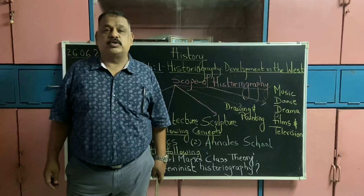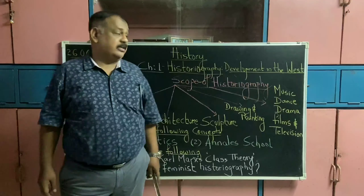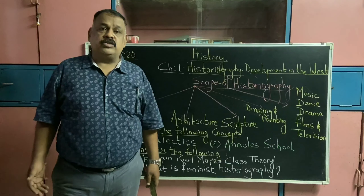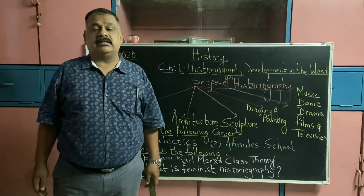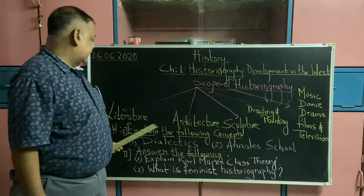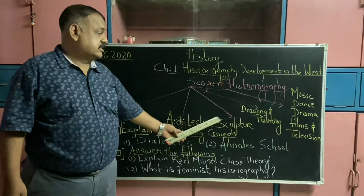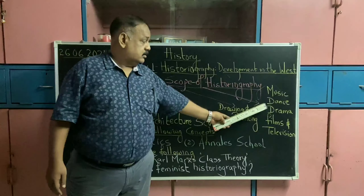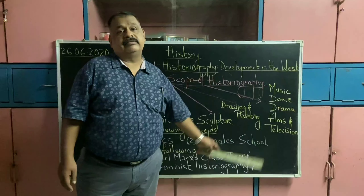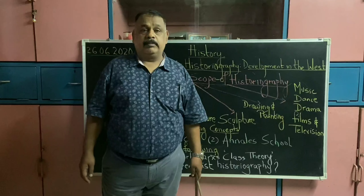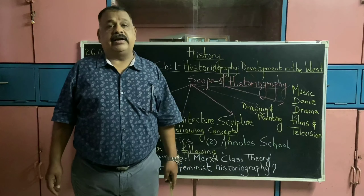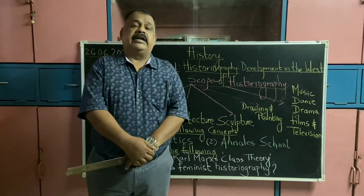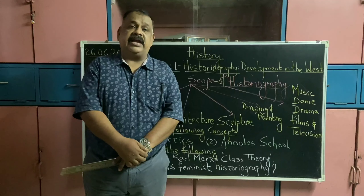I would like to wind up the lesson while stating the scope of historiography. History is not just pertaining to the subject itself, but it extends its content even to subjects like literature, architecture, sculpture, drawing and painting, music, dance, drama, films and television. I would like to sum up the entire chapter by stating that history is applied arts. People need to understand that history is all about applying it in your life.